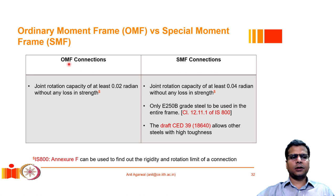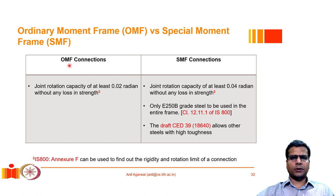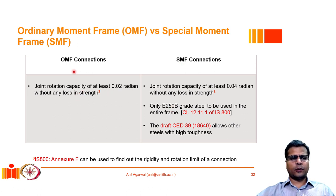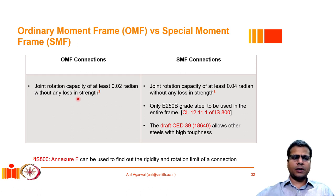An ordinary moment resisting frame (OMF) involves a less ductile type of rigid connection. Sometimes even semi-rigid connections are permitted as part of an OMF. Special moment resisting frames (SMRF), however, must use rigid connections only. The requirement for an OMF connection is that it should be able to accommodate at least 0.02 radians of rotation without any loss in strength.